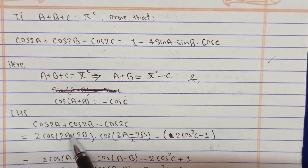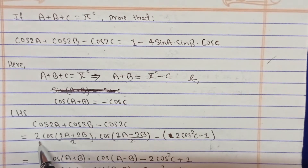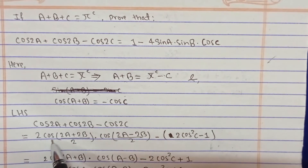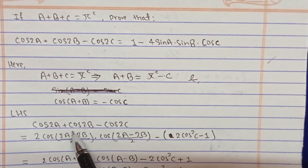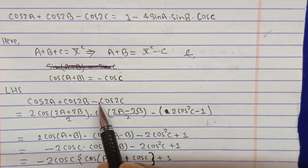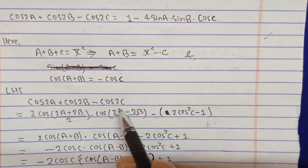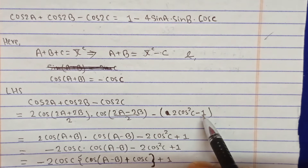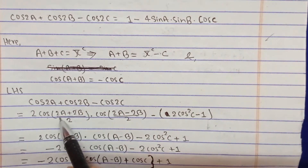Now taking the LHS, apply the sum-to-product formula: cos2A plus cos2B equals 2 cos((2A+2B)/2) times cos((2A-2B)/2), which simplifies to 2cos(A+B)cos(A-B). Also, cos2C can be written using the identity cos2θ equals 2cos²θ minus 1, so cos2C equals 2cos²C minus 1.